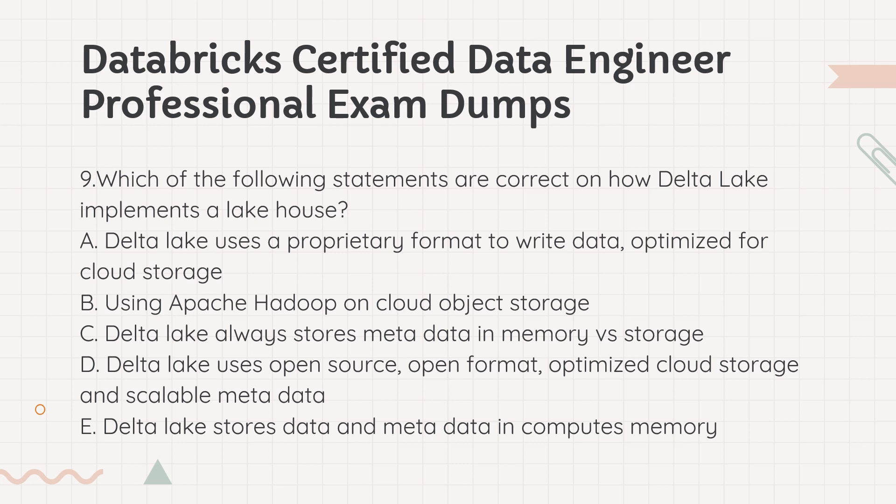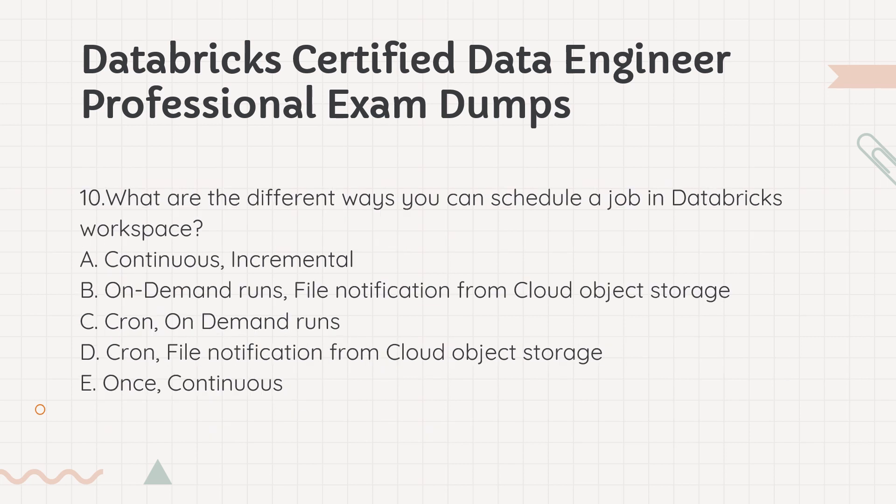Question 10: What are the different ways you can schedule a job in a Databricks workspace? a. Continuous, Incremental. b. On-demand runs, file notification from cloud object storage. c. Cron, on-demand runs. d. Cron, file notification from cloud object storage.